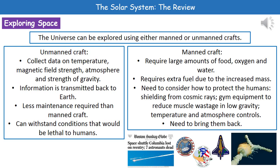If we consider manned craft, because we're putting humans on them, we obviously need to feed them, give them water, and let them breathe. We need large amounts of food, oxygen, and water sufficient for the entire mission. That increased mass means we need extra fuel to get out of the atmosphere and carry out the journey. We also need to protect the humans from cosmic rays, reduce muscle wastage in low gravity, find usable gym equipment, ensure the right temperature, and control the atmosphere — as Apollo 13 demonstrated, that can be very dangerous.